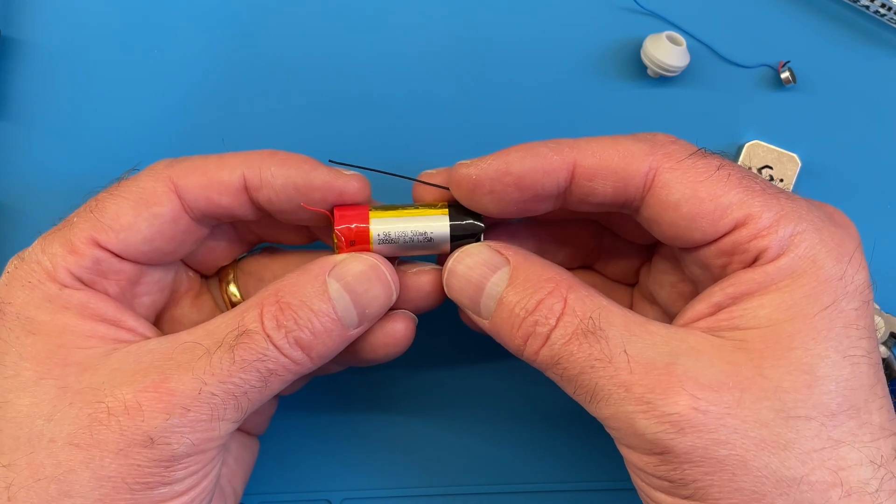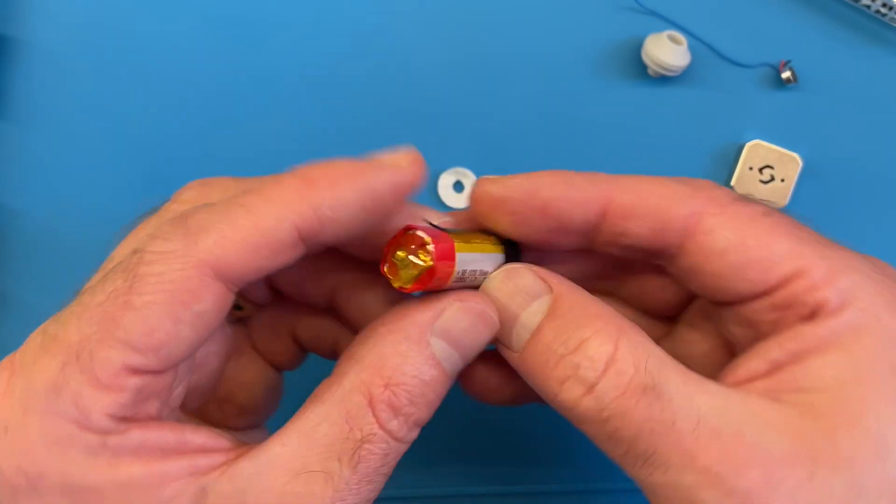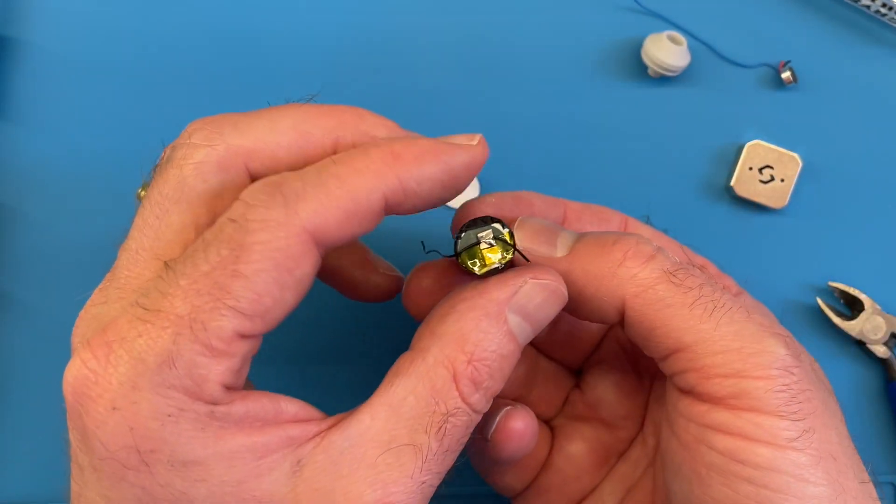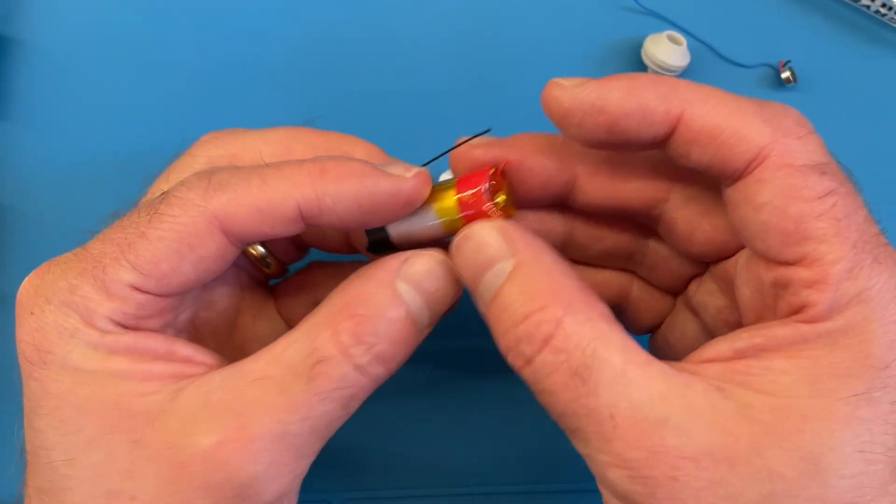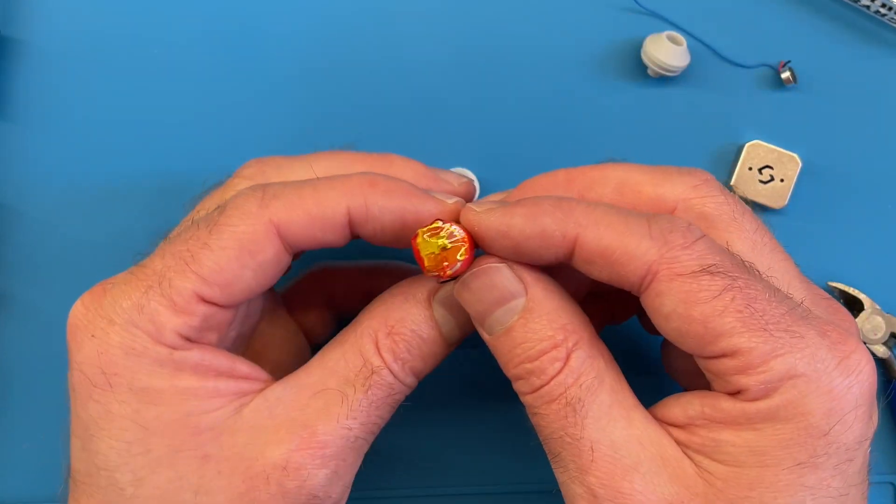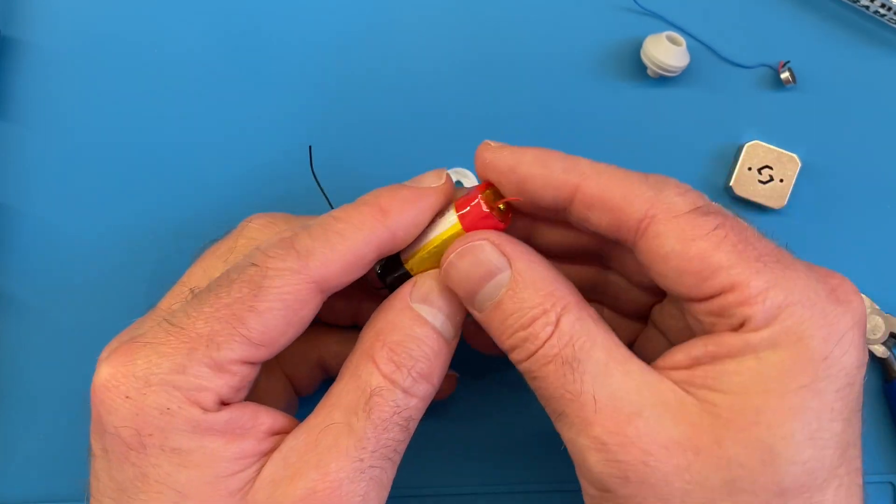So we've scored another 500mAh battery. So that's not too bad. I'll add that to my collection. Now one of the things about these batteries when you salvage them is they don't come with any protection circuitry. So let's add on a protection PCB and this will be a nice battery we can use in our future projects.